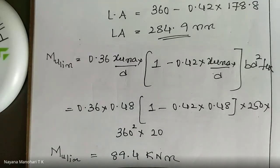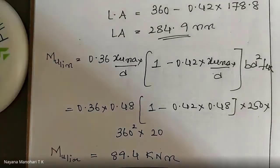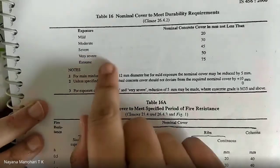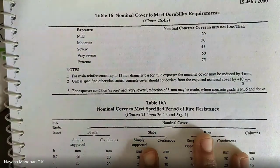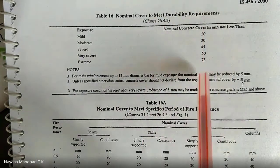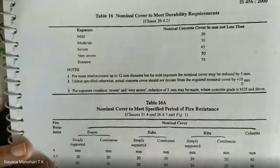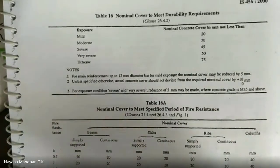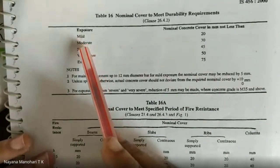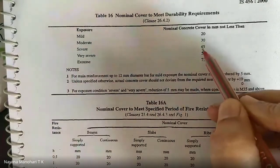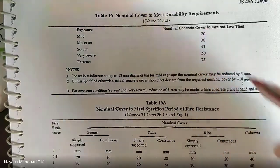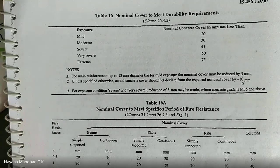This is how this type of theory problem is asked. The exposure condition can be changed — they may give moderate, severe, very severe, or extreme. For different exposure conditions, you must pick the correct nominal cover from Table 16, page 47 of IS 456:2000. You cannot assume it arbitrarily. If the exposure condition is specified in the problem, always refer to that table to get the correct nominal cover value. This completes the analysis of a singly reinforced rectangular beam.